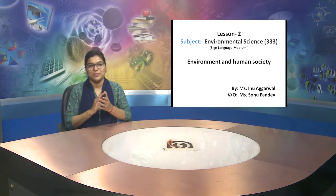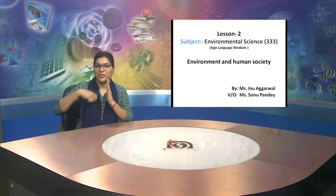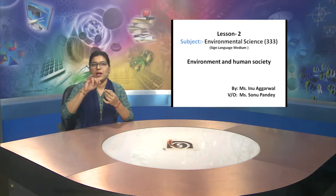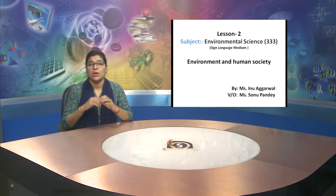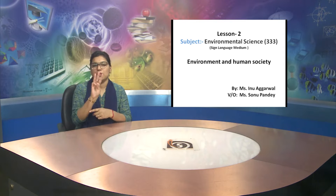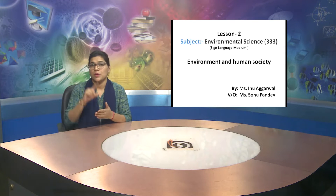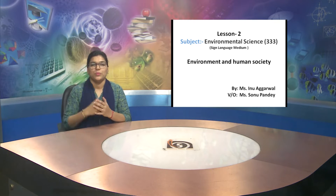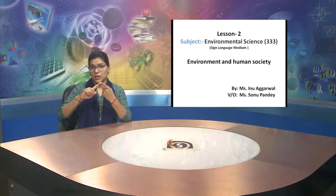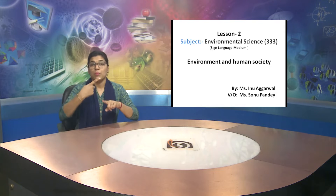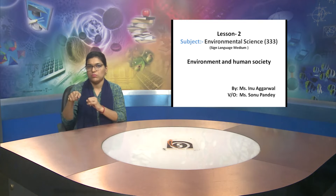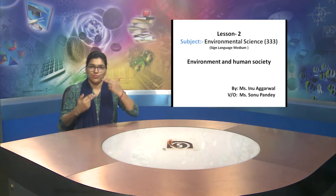Namaskar. Welcome you all in this educational video of NIOS. Today we are going to do subject EBS. This is for senior secondary level and the code number for this subject is 333. Today we are going to do lesson number two. The lesson name, as you can see on the screen, is Environment and Human Society.